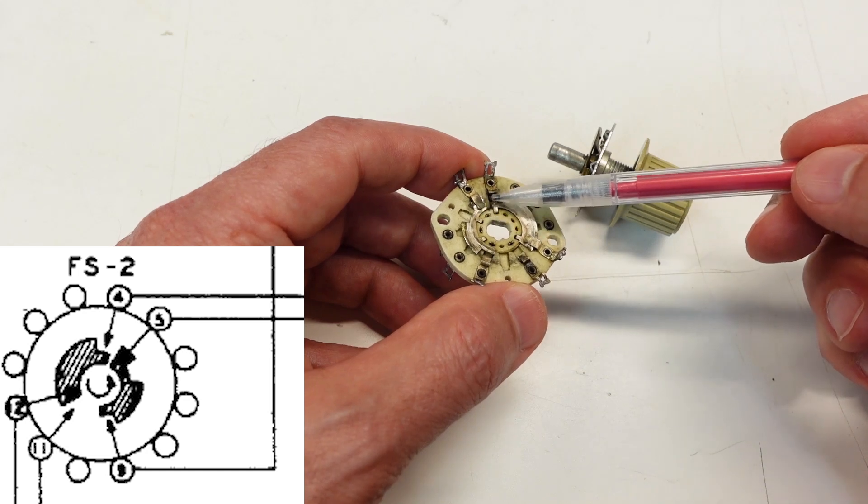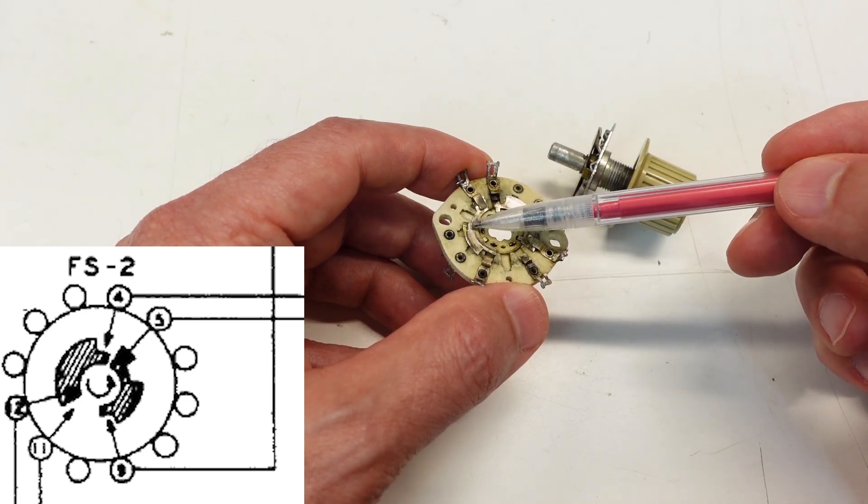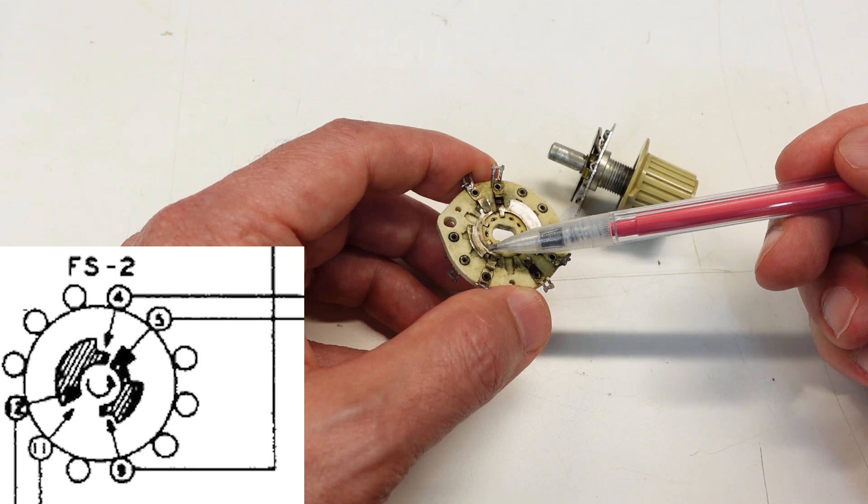And the second one over here, these contacts, control the high voltage side of the transformer secondary.